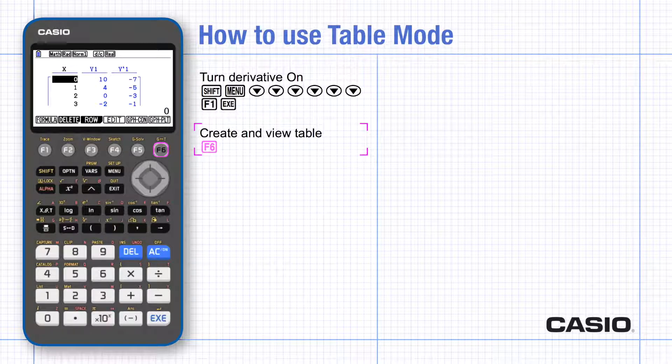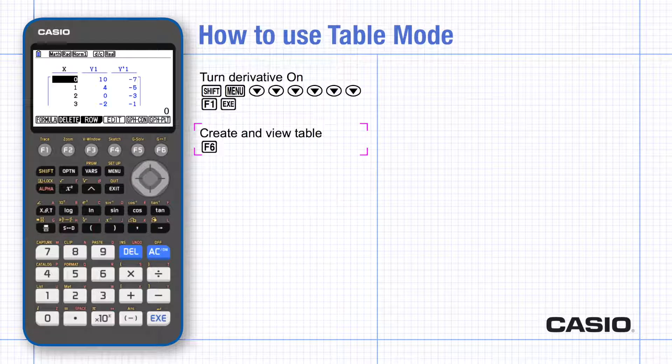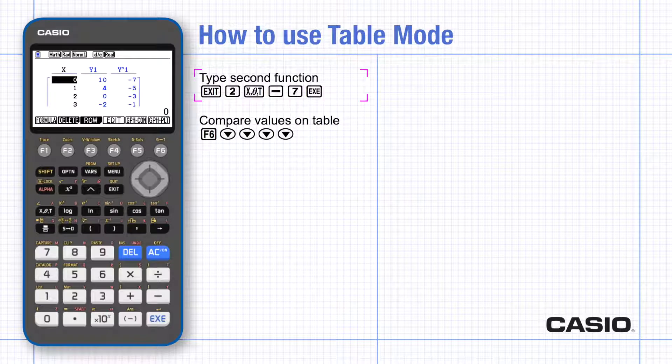Differentiation gives the gradient of 2x minus 7, and a useful way of checking that this is in fact correct is to enter another function alongside the one we already have.